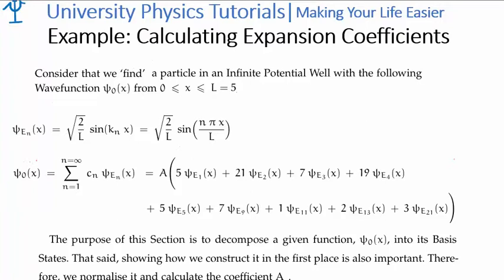Showing how we actually construct one in the first place is also useful, so bear with me for a moment. What we're going to do is show how we would construct a particular wave function that is a linear combination of basis states. We take the linear combination as we've done here, and we have this normalization constant a. So what I'm going to do is normalize a.